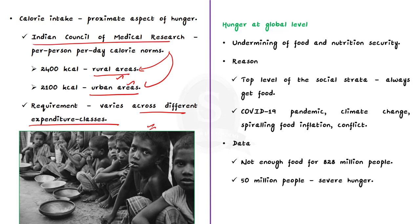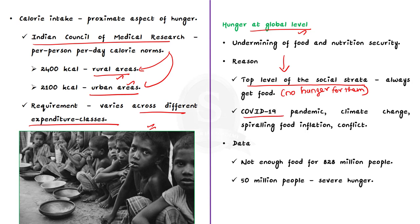On the global level, food and nutrition security continues to be undermined. One reason is that people at the top of the social strata always get food and don't experience the hunger faced by those at the bottom. Additionally, problems such as the COVID-19 pandemic, climate change, spiraling food inflation, and war further cloud the hunger problem that needs to be addressed immediately.